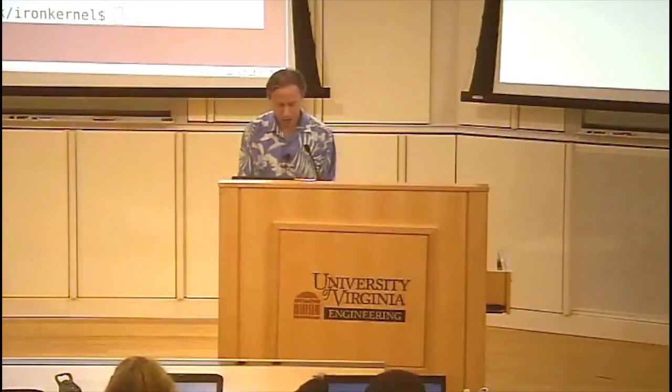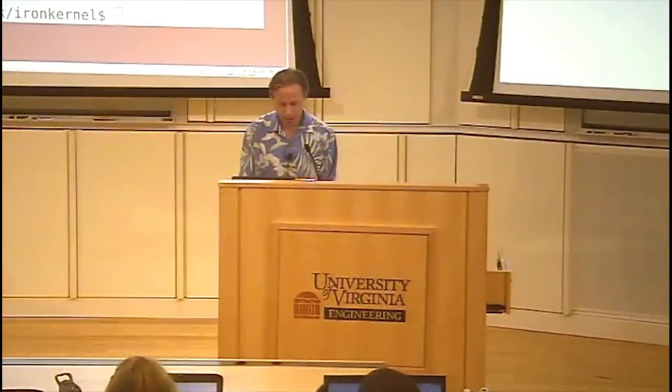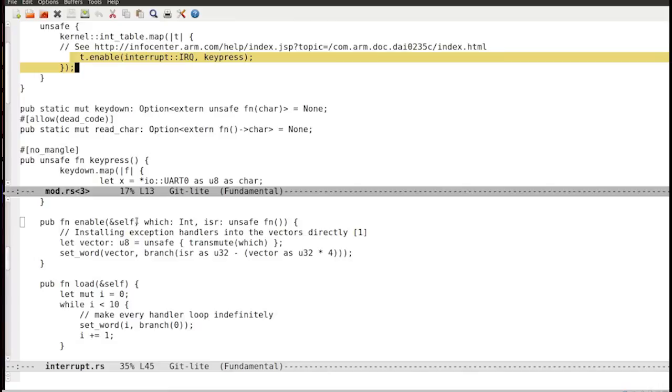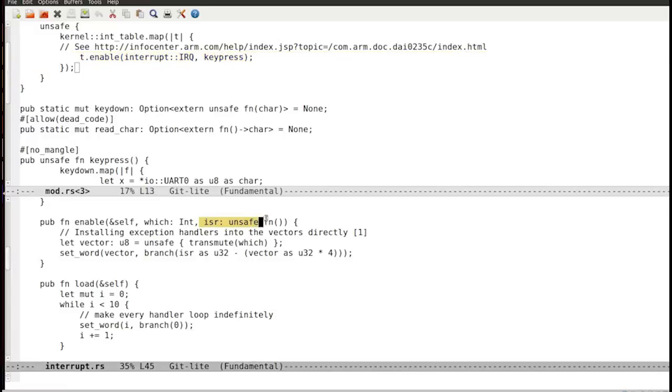There are two correct answers to this, depending on, well, there are many correct answers. So if we look at the enable code, we can see what's getting passed in. Okay, so here's the enable, right? We're calling enable, passing in the IRQ that's giving us the connection to the interrupts, and we're also passing in a function, an unsafe function, but we're passing in a function. That's the function that gets called when that interrupt happens.